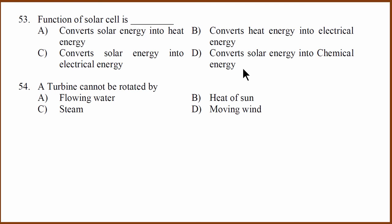53rd question. What is the function of solar cell? Solar cell converts solar energy into electrical energy. It doesn't convert solar to heat or heat to electrical or solar to chemical. It directly converts solar energy into electrical energy. Next one. A turbine cannot be rotated by the heat of the sun directly. It can be rotated by flowing water. We can use heat of the sun to boil water and using that water we can get steam and then once we get steam we can actually rotate a turbine. Whereas steam, wind and flowing water you can use to rotate the turbine.